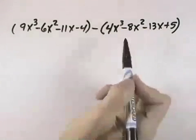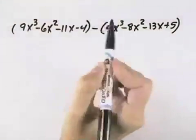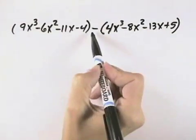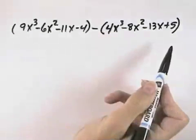In this problem, we're subtracting the second polynomial from the first. With the negative sign in front, that means we'll need to distribute the subtraction through the polynomial.